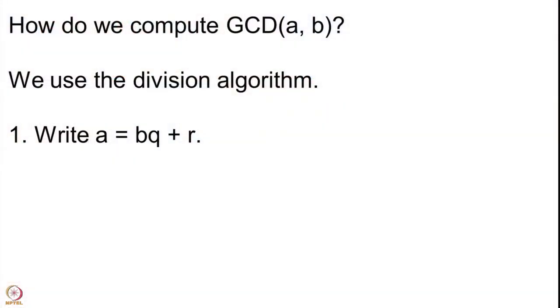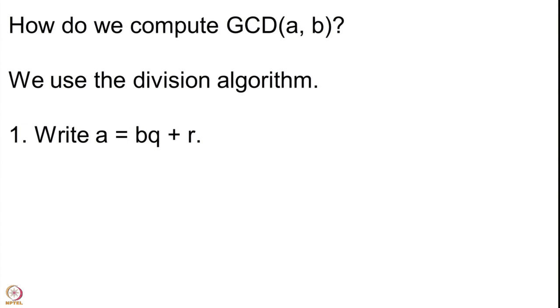We have A = BQ + R and remember R is between 0 and B−1 — it is not equal to B. So if R is not equal to 0, then since R is less than B, you can divide B by R. Call B the new A₁ and R the new B₁, and then you have A₁ = B₁Q₁ + R₁ where R₁ is further smaller, and we proceed this way.